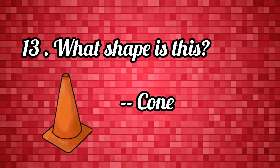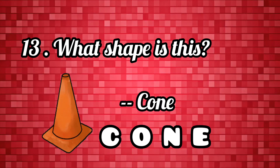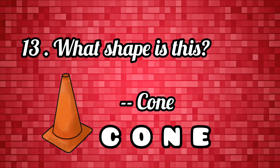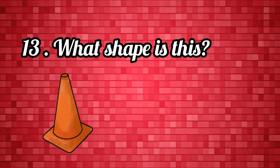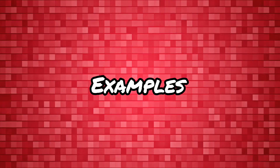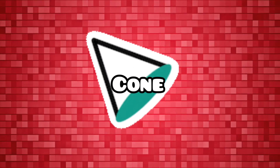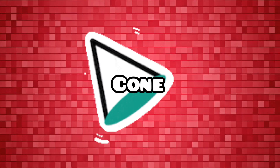Now can you tell me what shape this is? This is a cone. C-O-N-E. A cone shape is a triangle with an oval surface. For example, a cone ice cream and a Santa cap. C-O-N-E, cone.